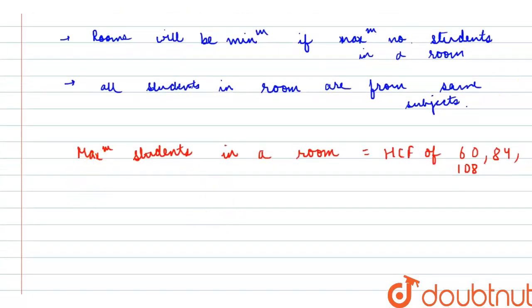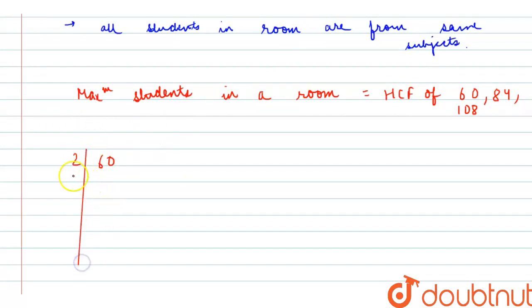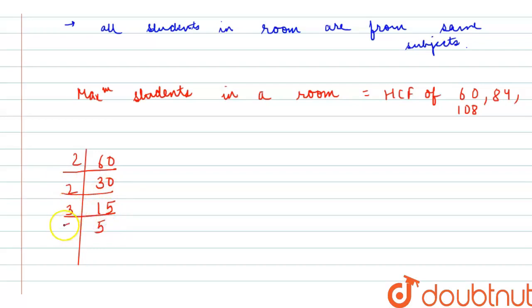Let's do the prime factorization. For 60: since it's an even number it goes with 2 — so 2 × 30, 2 × 15, 3 × 5, giving factors 2 × 2 × 3 × 5.